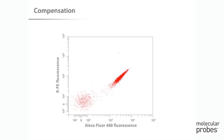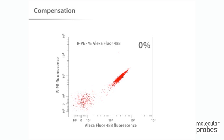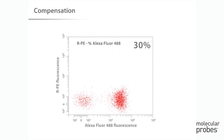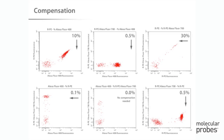The Alexa Fluor 488 labeled population is compensated so that the mean fluorescence values in both the positive and negative populations are equal in the RPE channel. Practically, this is performed for each event by subtracting a percentage of the fluorescence in the Alexa Fluor 488 channel from the fluorescence in the RPE channel. Depending on the instrument and software used, compensation could be set either in the instrument hardware before the sample is run or within the software after data collection. Every fluorophore combination that shows spectral overlap must be compensated.